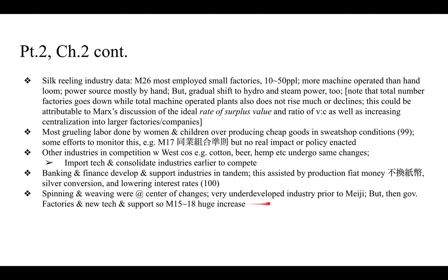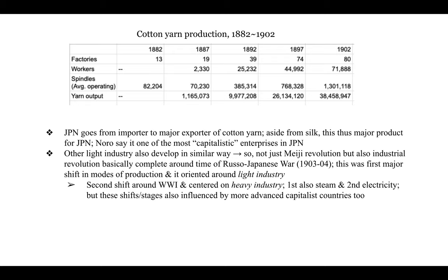Along with silk, cotton yarn production was a key export commodity allowing capitalists to build up wealth. Noro highlights data from 1882 to 1902 showing exponential growth in the number of factories, workers, spindles operating, and total yarn output. Japan went from an importer to a major exporter of cotton yarn. Noro says cotton was one of the most capitalistic enterprises in Japan, and other light industries developed similarly.